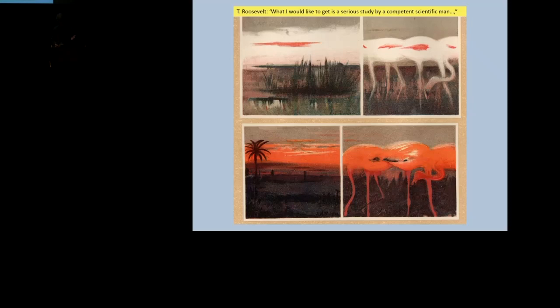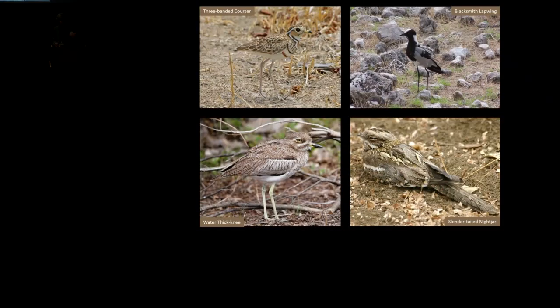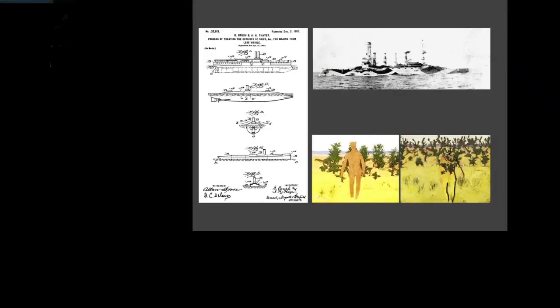So why do I even mention Thayer? Well, he did promote several ideas that are important in biology today. One was countershading. The other was disruptive patterns. So the top two birds, the Courser and the Lapwing, are actually quite strikingly colored. But because of the way the colors are on the plumage, they're quite well camouflaged in that situation. On the bottom two pictures, the birds are already well camouflaged, but it's even better because of the white wing patches.